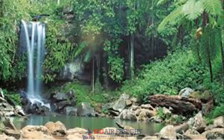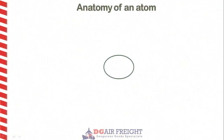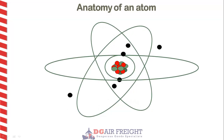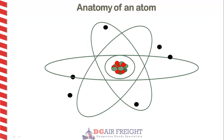Everything in nature is made up of atoms. They are the basic unit of matter. An atom consists of a nucleus that contains positively charged protons and neutrons that have no charge. The total number of protons and neutrons is called an atom's atomic mass number. Orbiting around the nucleus are negatively charged electrons.